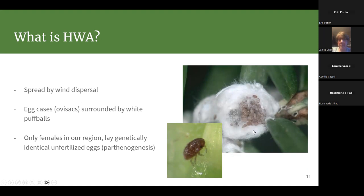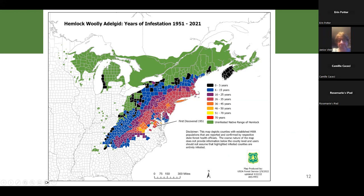Even one tiny individual adult female HWA getting into a hemlock stand, if left unnoticed and untreated, can bring down that entire forest over time on its own. When we look for them, we look for fluffy white houses they build as they feed on hemlock sap. Once they pick a spot on young twigs at the end of branches, they build a shelter called an ovisac to protect themselves and their eggs. They stay there, making them easy to find at the right time of year.